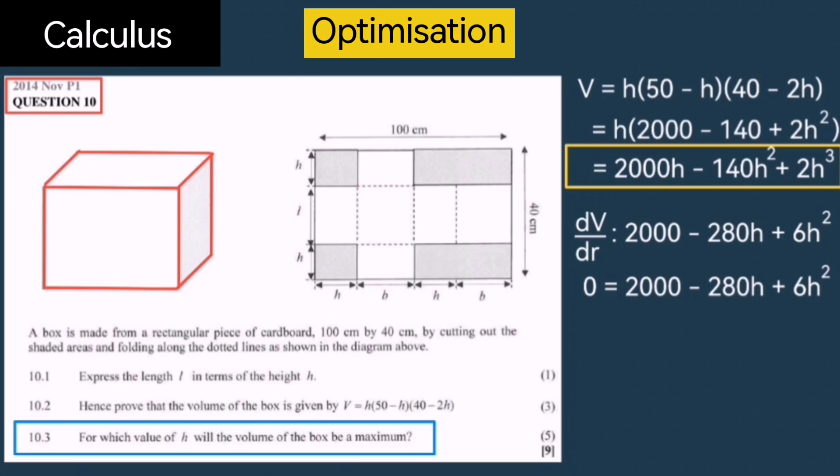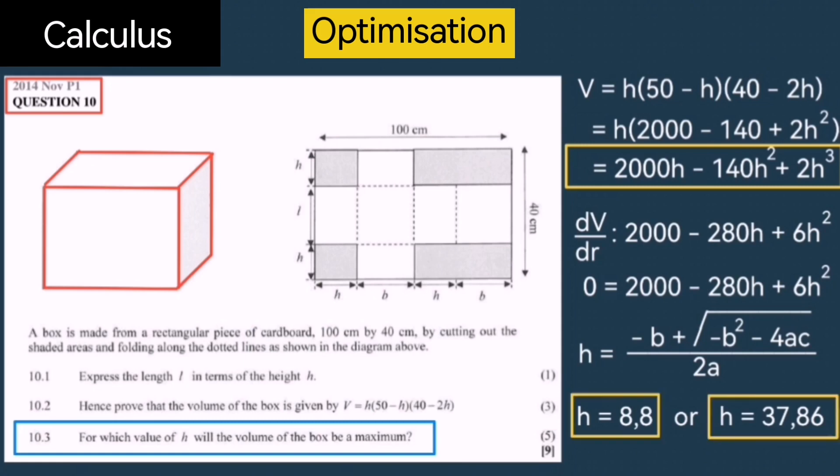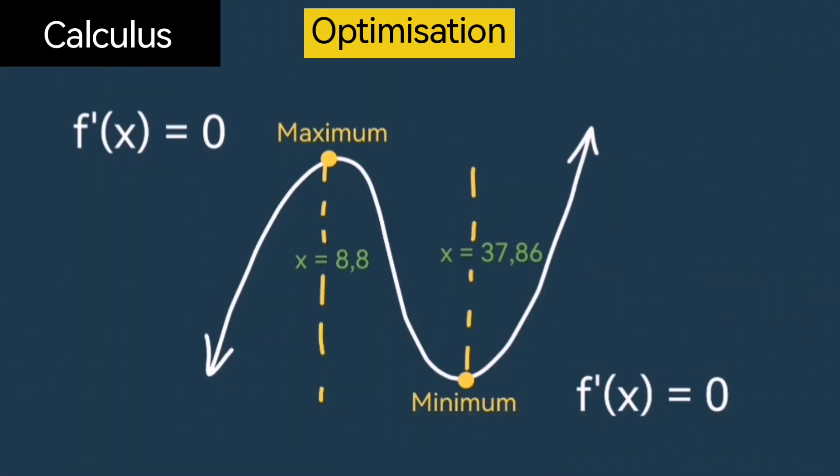Here we have a trinomial or quadratic equation. To solve for H, make use of the quadratic formula and you'll find two answers: H equals either 8.8 or 37.86. One will give us a maximum volume and the other a minimum. Since the equation represents a positive cubic function, the first X value will give us our maximum and the second our minimum. Therefore, 8.8 is the H value that would give us a maximum.